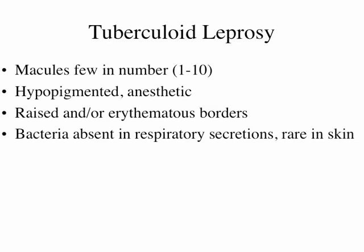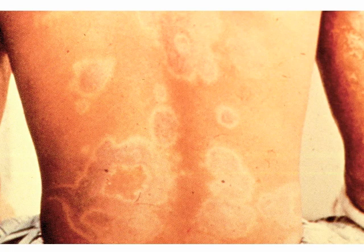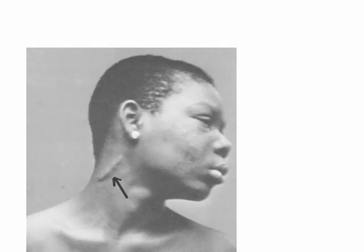In tuberculoid leprosy, in terms of what skin lesions look like, there are relatively few macules — maybe one to ten in the earliest stage. They're hypopigmented, anesthetic, with raised borders, and bacteria are absent from respiratory secretions at this early point of disease. Here you can see a very benign lesion, another with raised edges. In people with dark skin, this is very easy to see — big patches, all with some leprosy bacilli. As you go further towards the lepromatous end, you start seeing lesions becoming symmetric, sometimes in a butterfly pattern. In tuberculoid disease when it's damaging nerves, you often have big thickened nerves under the skin.